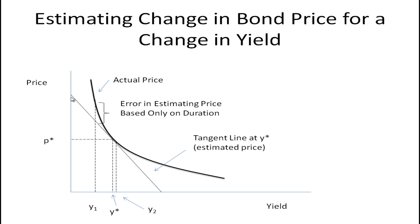What we can see here is that I've drawn a line that's tangent to this price-yield relationship, and that line is used to estimate the price change based on duration. You can see that if the change in yield is very small — say two basis points or five basis points — this straight line does a pretty good job of estimating the change in the bond's price.